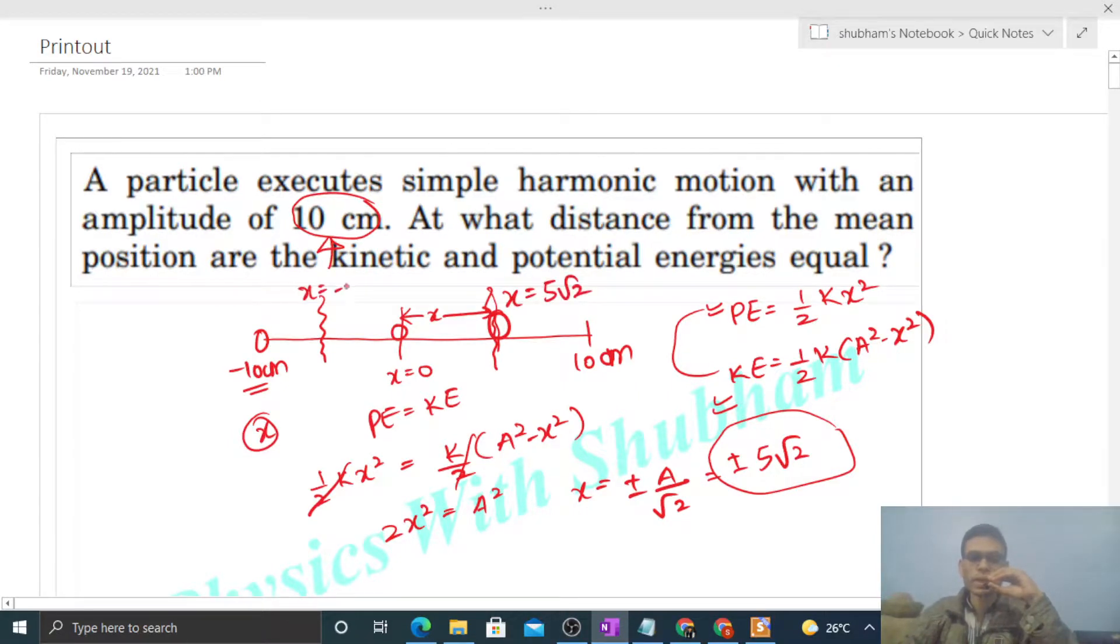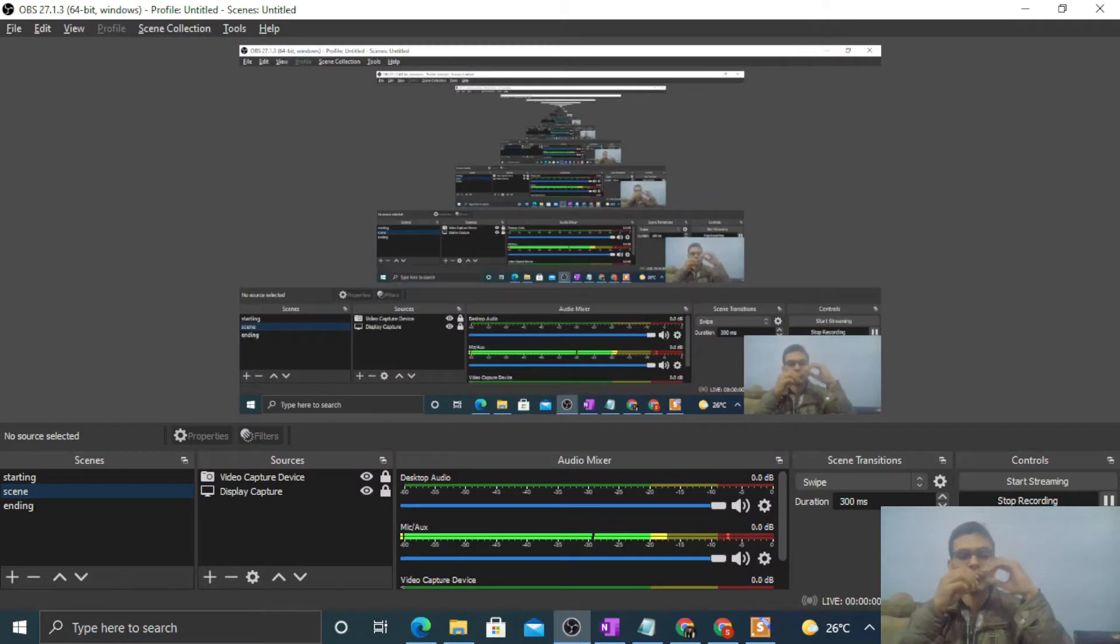Means x equals 5 root 2 and x equals minus 5 root 2. At both places, potential energy and kinetic energy will be equal. So I think you have understood. Let me know if you still have any confusion. Okay guys, keep working hard, best of luck, bye.